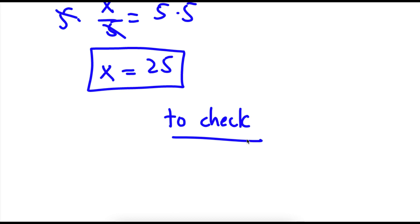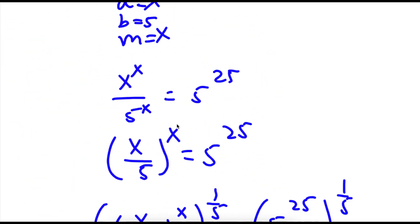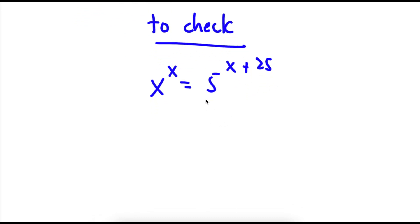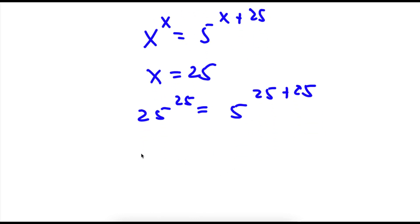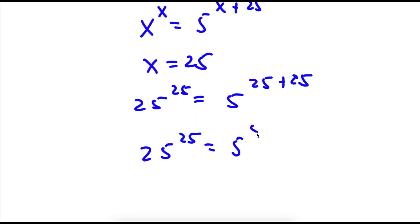Now to check, our original equation was x to the power of x equals 5 to the power of x plus 25. x is equal to 25, so now I have 25 to the power of 25 is equal to 5 to the power of 25 plus 25. Now I have 25 to the power of 25 is equal to 5 to the power of 50.